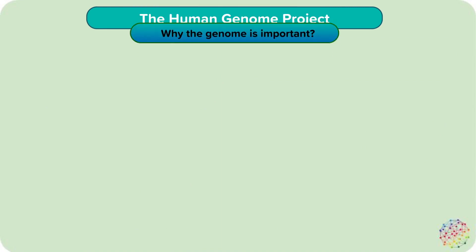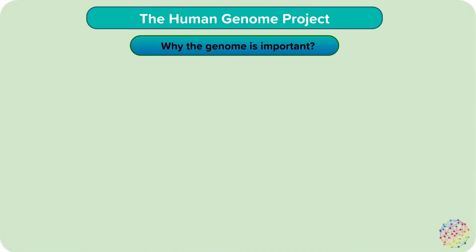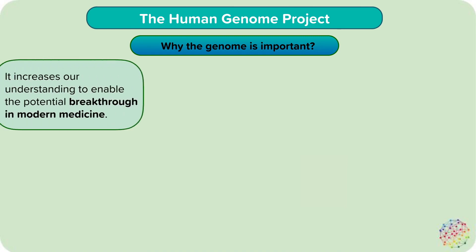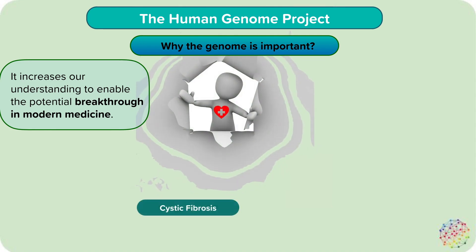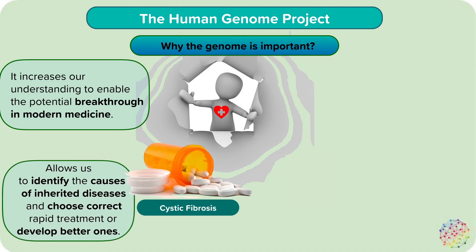Why have we spent so much money finding out all this information about human DNA and the genome? Such research is significant for studies of evolution and organism classification, but also the treatment of disease. It increases our understanding so much that breakthroughs in modern medicine are already set to progress. For example, it has enhanced our knowledge of inherited disorders such as cystic fibrosis and sickle cell anemia, helping us develop new medicines or treatment procedures such as gene therapy.